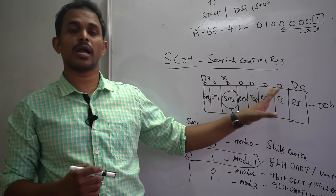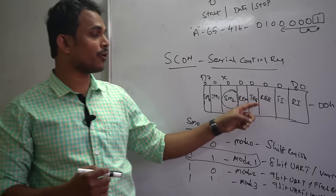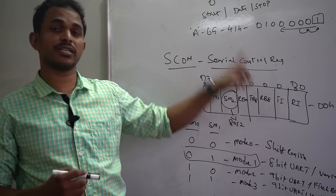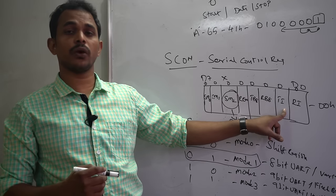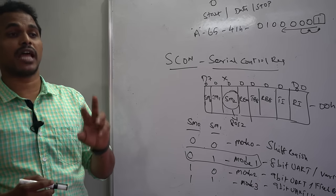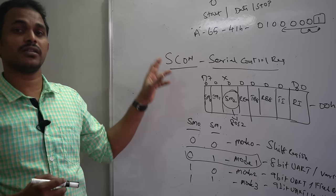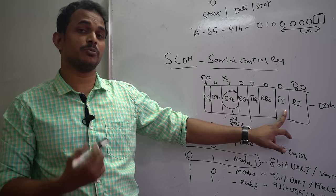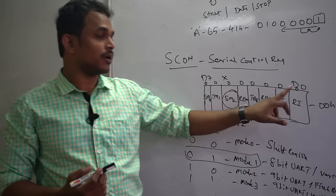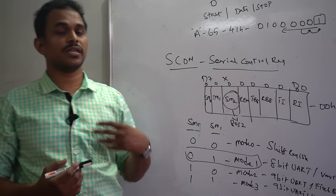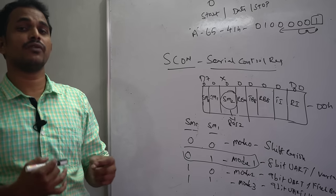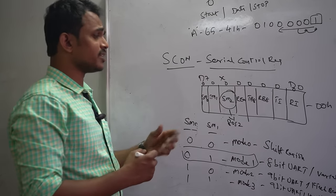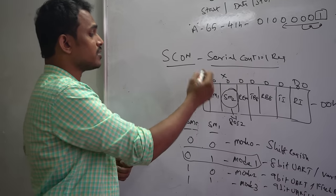TB8, RB8, TI, and RI are not programmed by the programmer — they are set automatically by hardware. TB8 sets to 1 on a transmit stop bit error; RB8 sets to 1 on a receive stop bit error. TI sets to 1 when one byte of data transmission is complete, similar to how a timer flag works. RI sets to 1 when one byte of data is received from an external device.